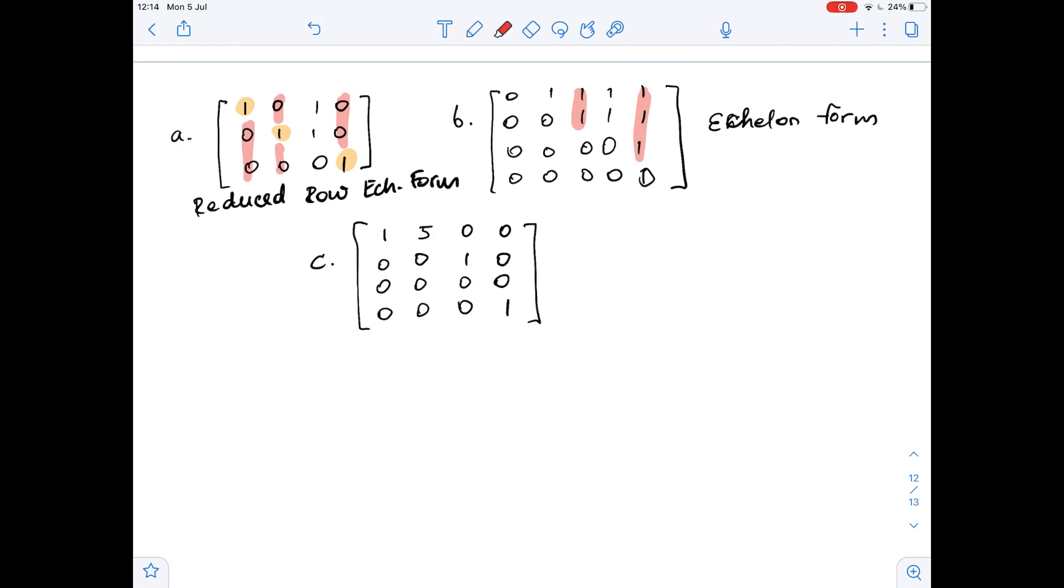Okay, now let's look at part C. As you can see in part C, we have one entry which is five, and that means that the matrix is not in echelon form and it's not in reduced row echelon form. So it's not echelon form and it's not reduced echelon form.